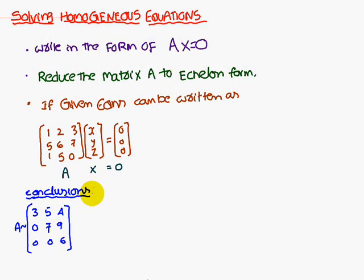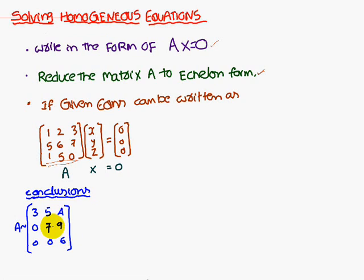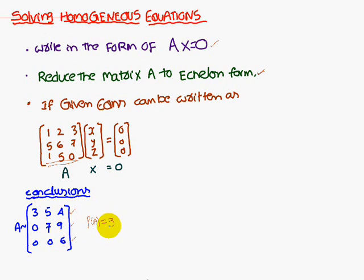Now, how do we draw conclusions? Reduce matrix A to echelon form. If matrix A has been reduced to echelon form, we can identify it because the number of zeros increases in ascending order across rows. The rank of A equals the number of non-zero rows. If there are three non-zero rows, rank of A equals three.